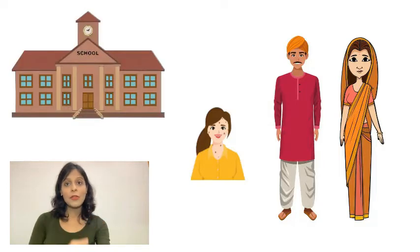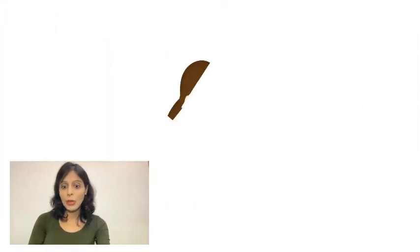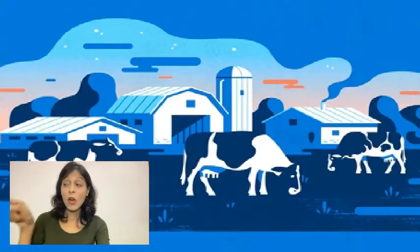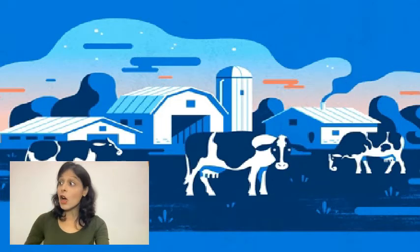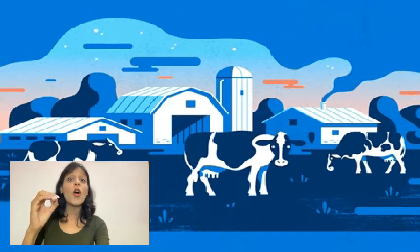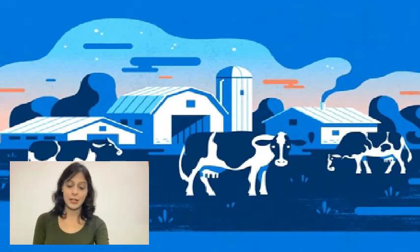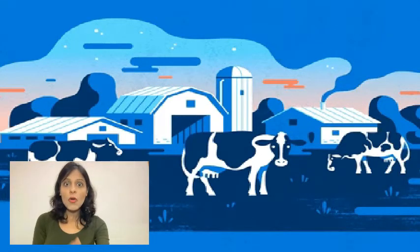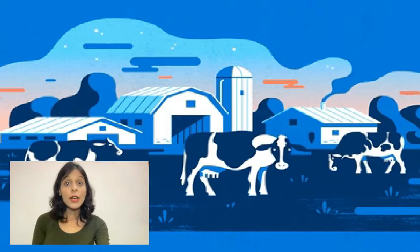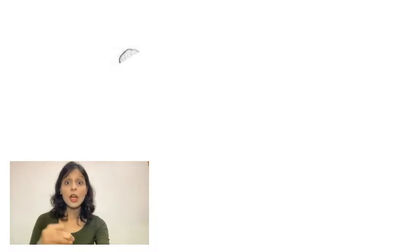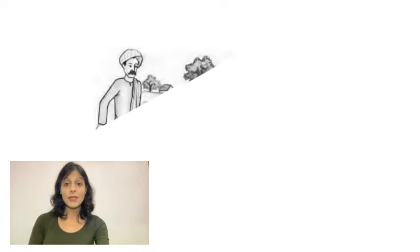But Bholy was frightened. She was reminded that a few days ago, their cow Lakshmi was sent out of home and her father got money in return for it. She thought that she too would be sold like Lakshmi. It was also the first time that Bholy got new clothes to wear when she was sent to school.